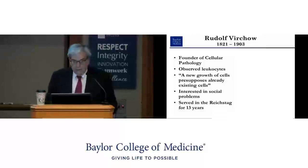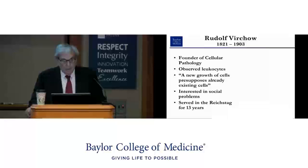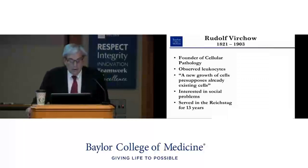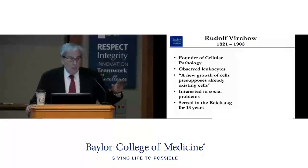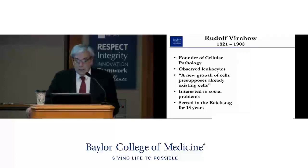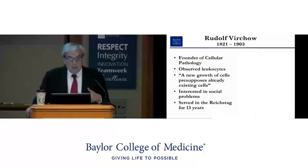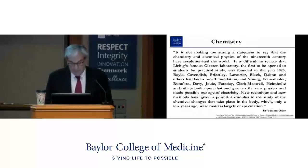Rudolf Virchow was the founder of cellular pathology. He made many observations on leukocytes and examined the relationship of cells and their origins, moving from a view of tissues down to the cellular level. He had parallel interests in social problems, served in the Reichstag for 13 years, and was instrumental in social causes in Germany, but came to be known as the foremost person focusing on cellular pathology.